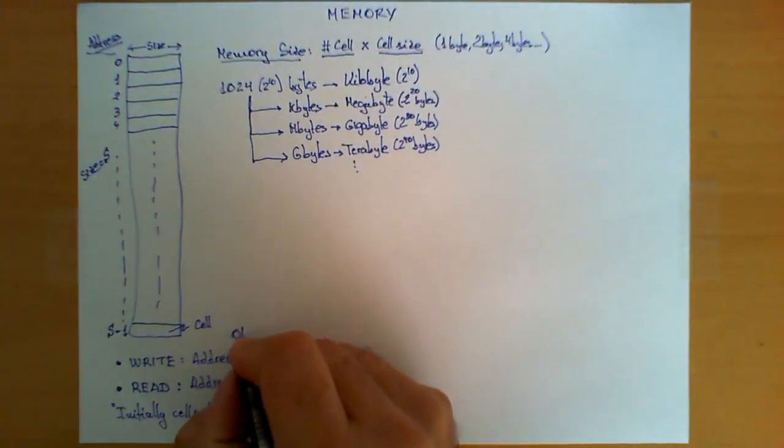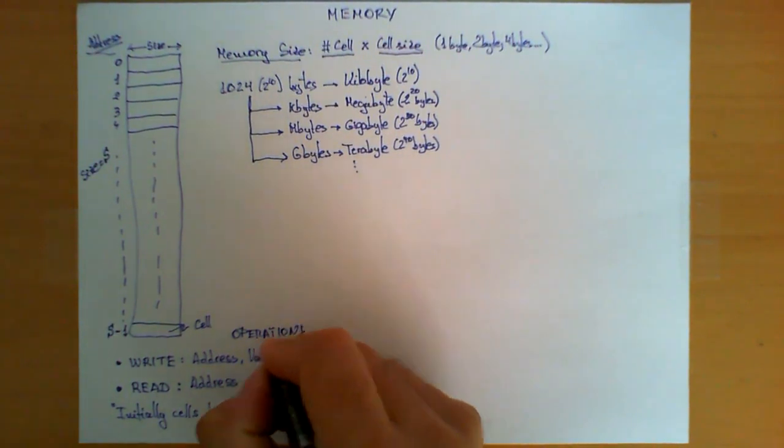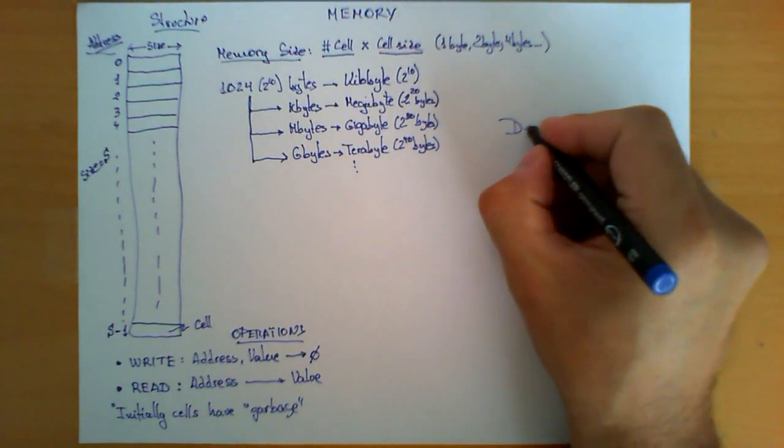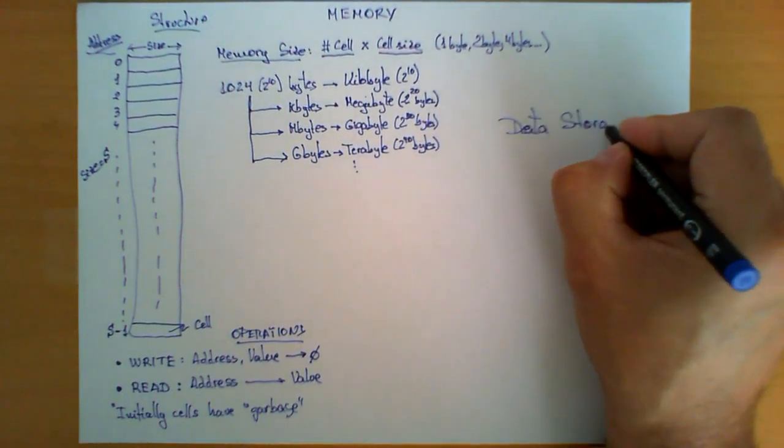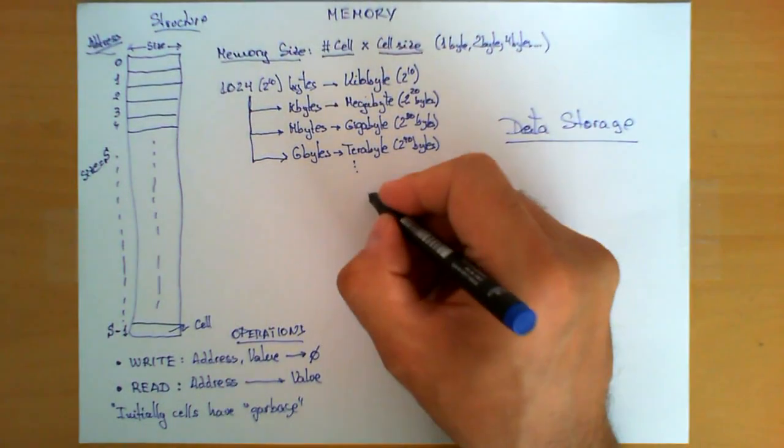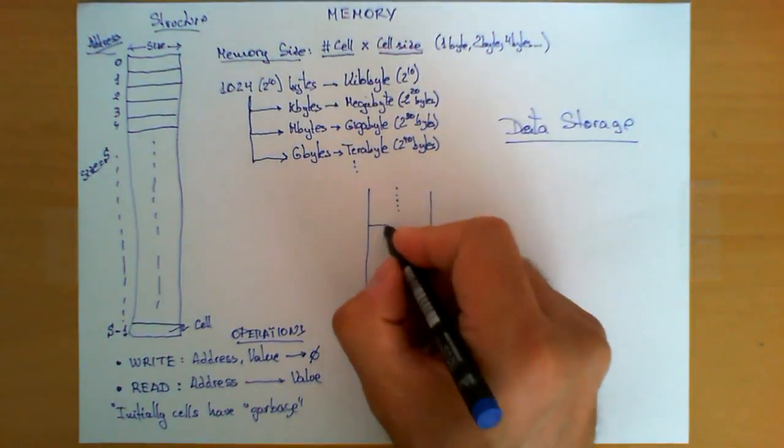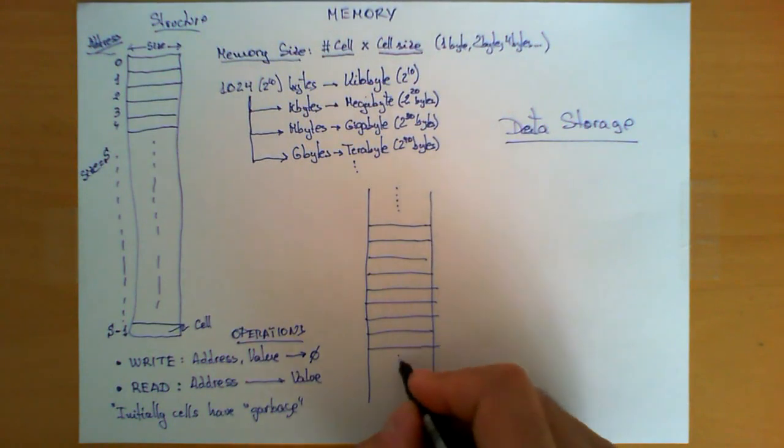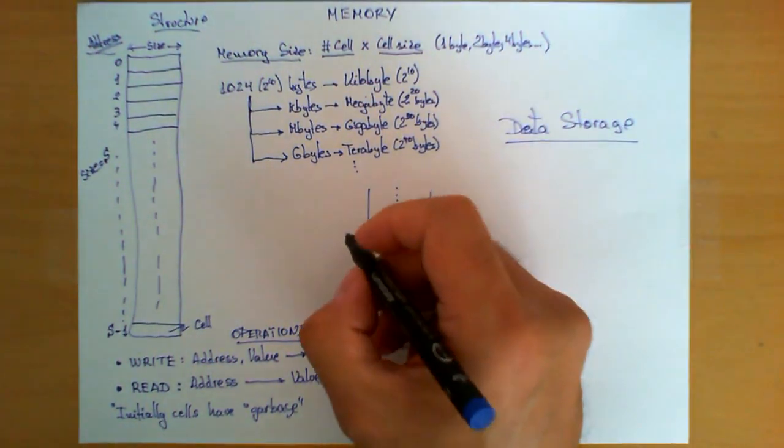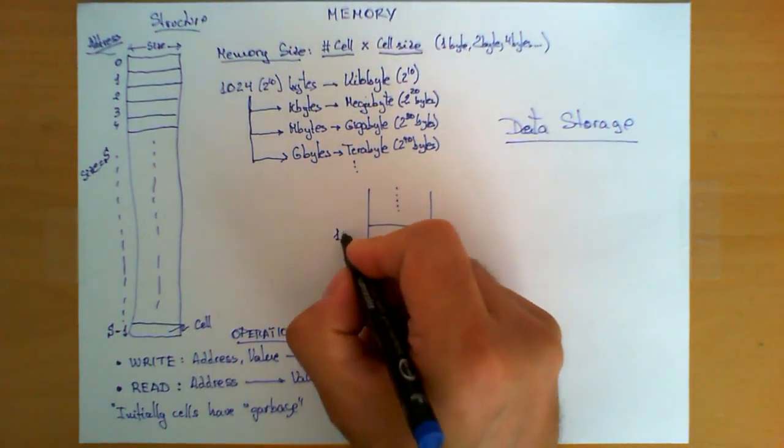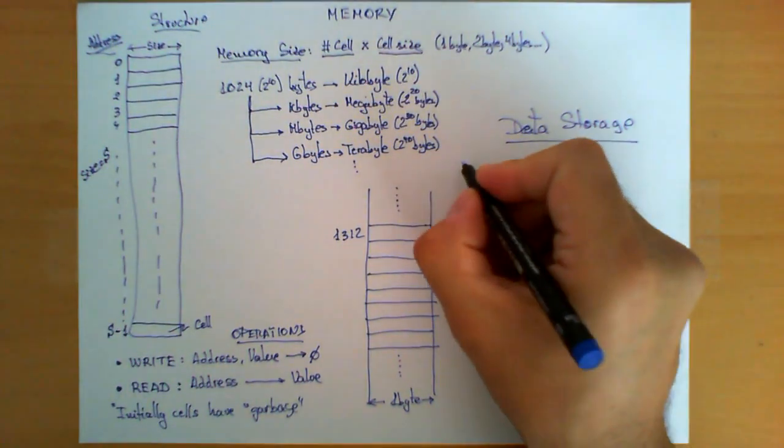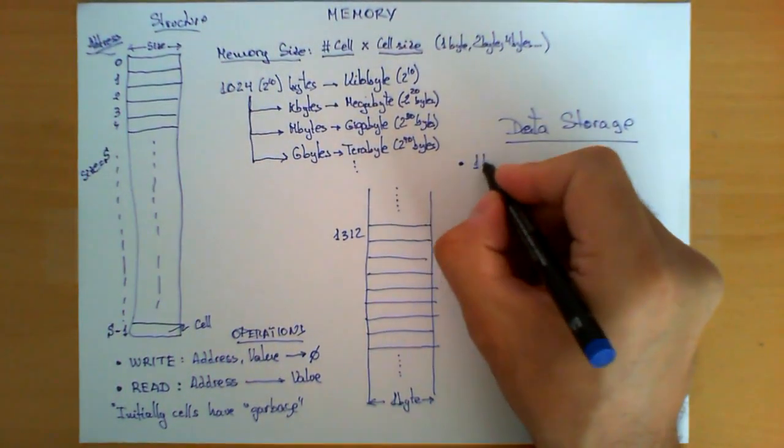After we cover memory size, operations, and structure, let's talk now about examples. Let's see how we perform data storage, how we store data in memory. Let's assume I have just a portion of memory. I have certain cells above me, and I'm going to draw some of them. Let's see the easiest one: how do we store one byte in memory?